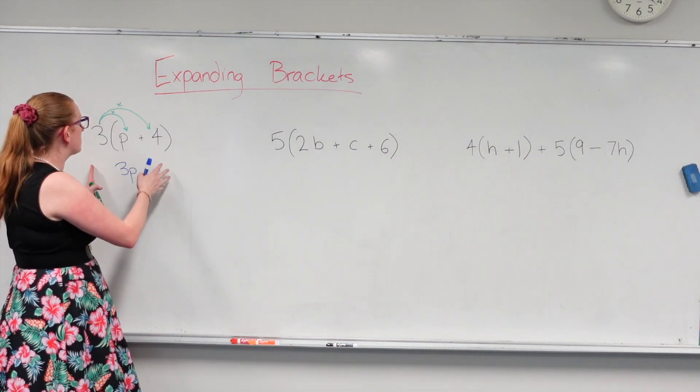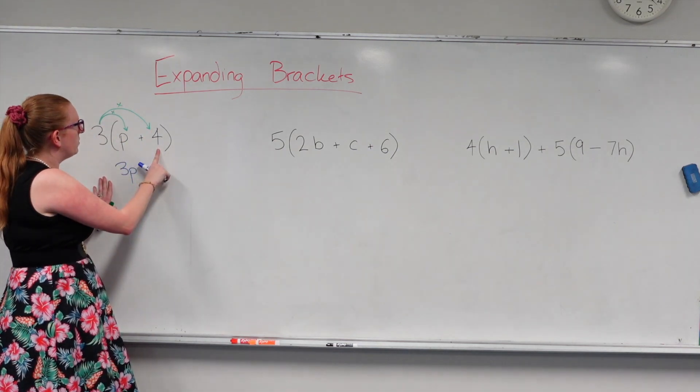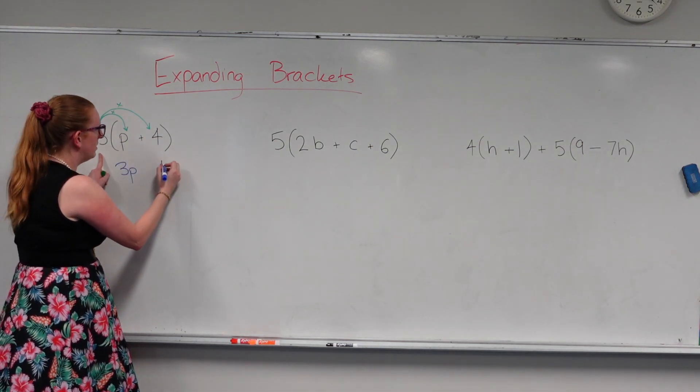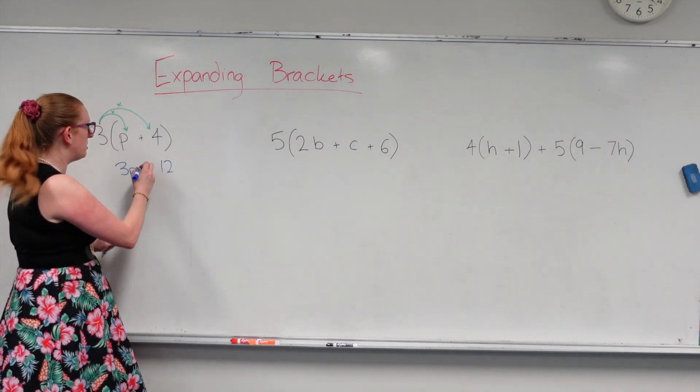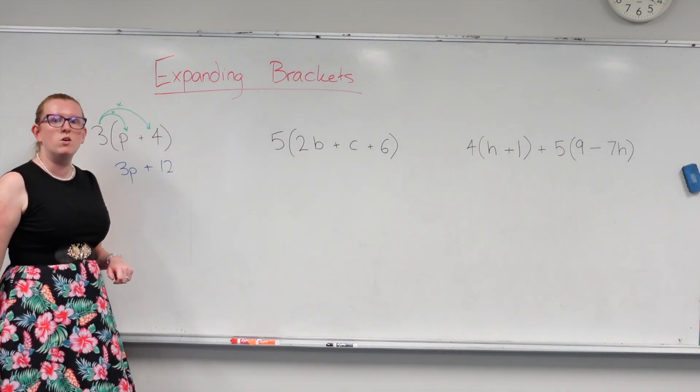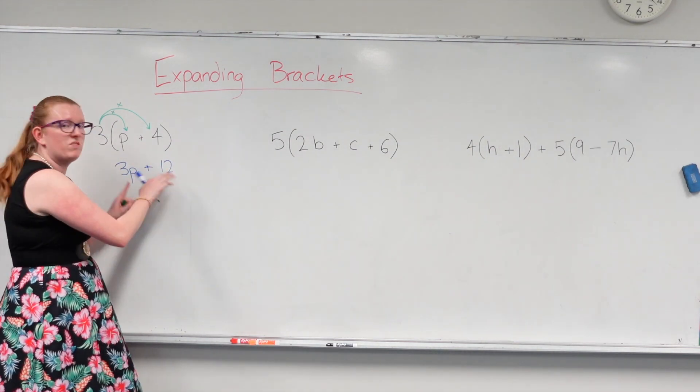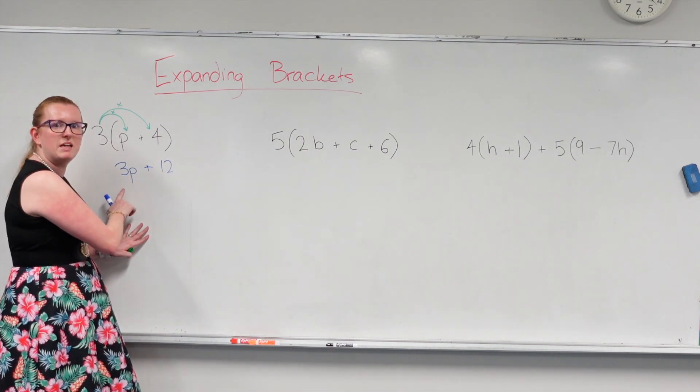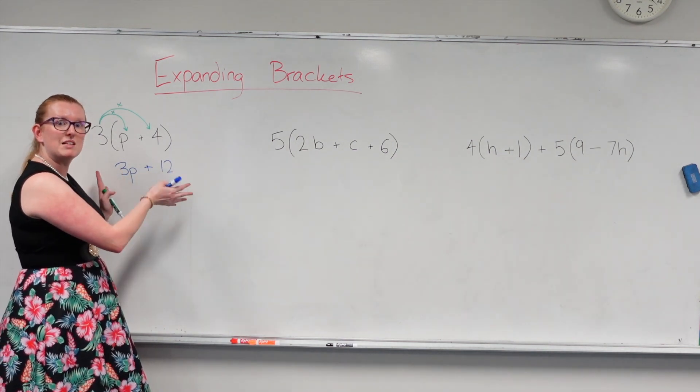Now let's look at the next one. I've got 3 times positive 4. So 3 times 4 is 12. And because the number's positive, I'm going to put a little plus in there. And I can't simplify this any further because I can't add a 12 to something that has a p on it. So I just have to leave it there and that's our answer.